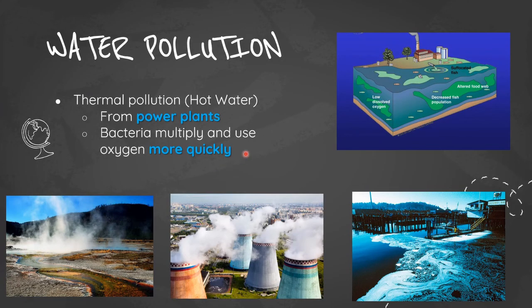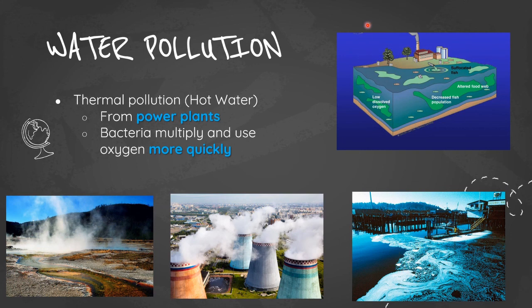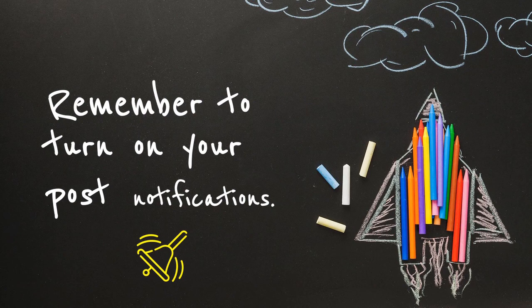Thermal pollution involves hot water as the pollutant, typically from power plants or industrial facilities used to generate electrical power. Water used as a coolant is returned to the natural environment at a higher temperature. This sudden temperature change decreases the oxygen supply, increases saprophytic bacteria, which multiply and consume oxygen more quickly, disrupting the ecosystem.